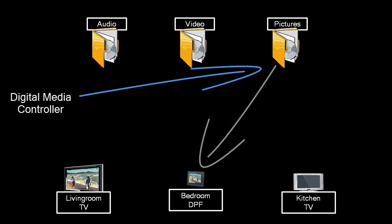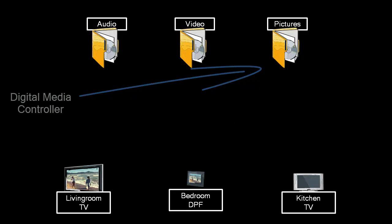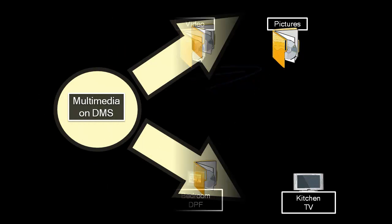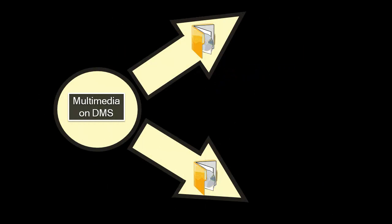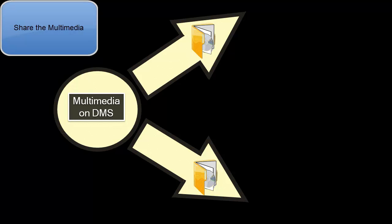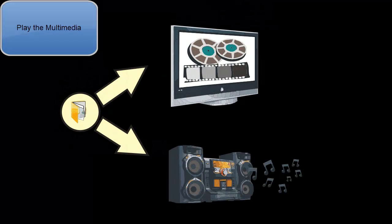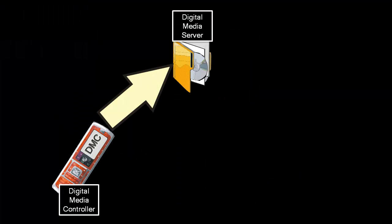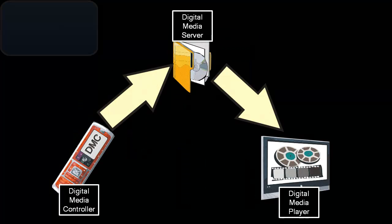A DLNA-enabled network device can do one, some, or all of the following: share the multimedia on the local network, render or play the multimedia, or control what multimedia to play and where to play it.